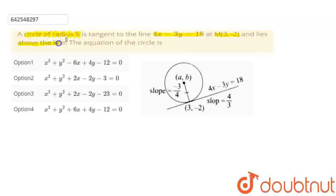And lies above the line. The equation of the circle is option 1: x square plus y square minus 6x plus 4y minus 12 is equal to 0. Option 2 is x square plus y square plus 2x minus 2y minus 3 is equal to 0. Option 3 is x square plus y square plus 2x minus 2y minus 23 is equal to 0. Option 4 is x square plus y square plus 6x plus 4y minus 12 is equal to 0.